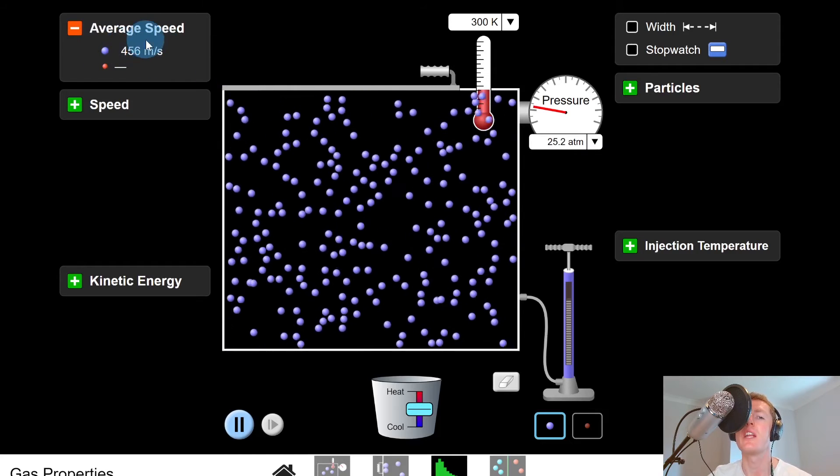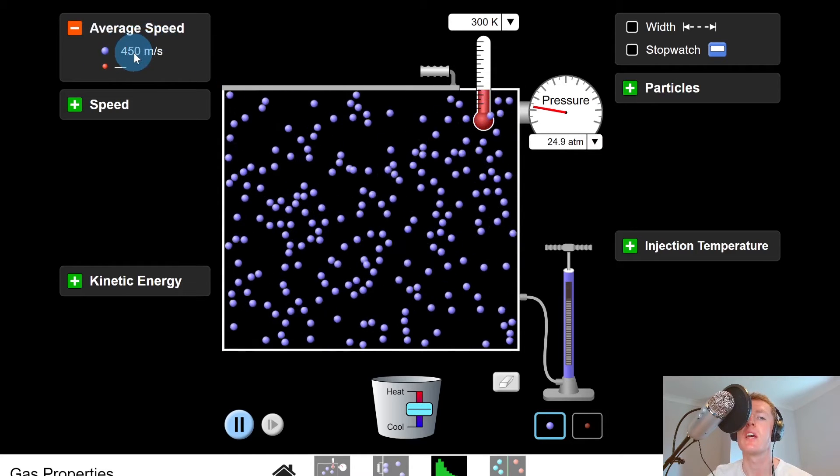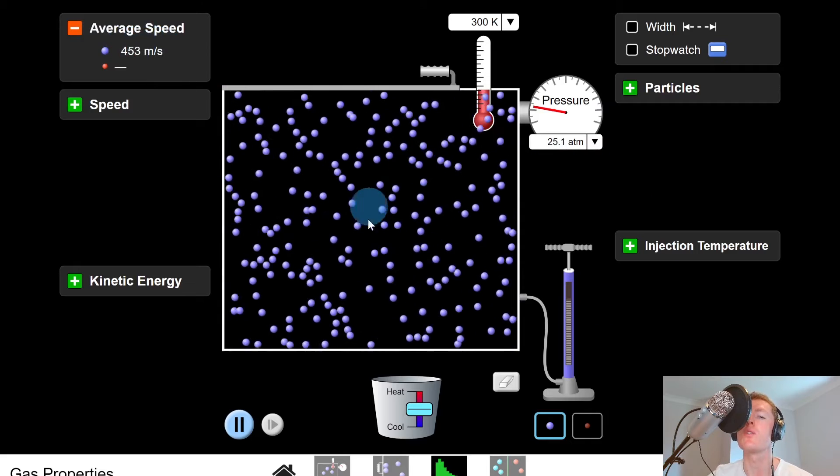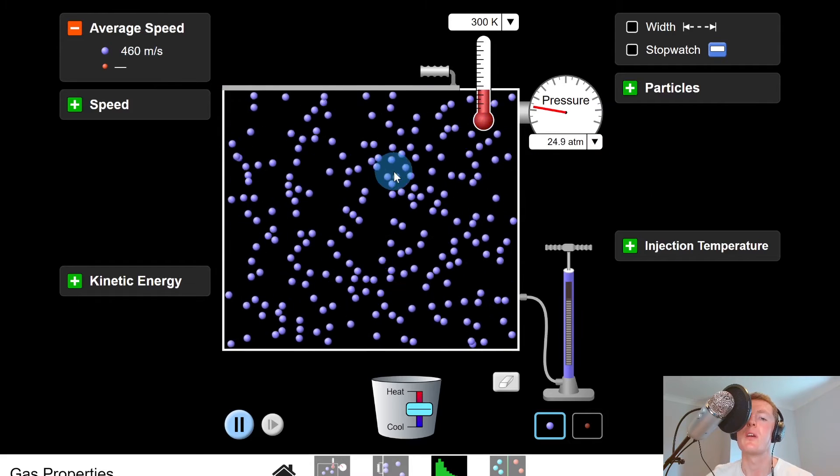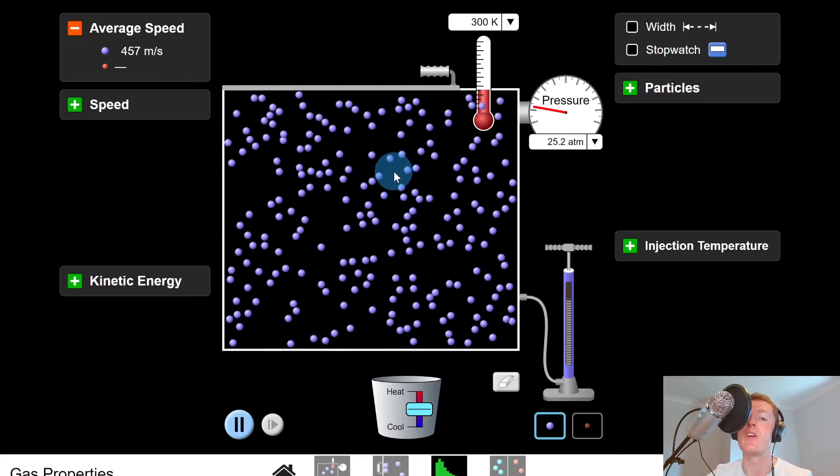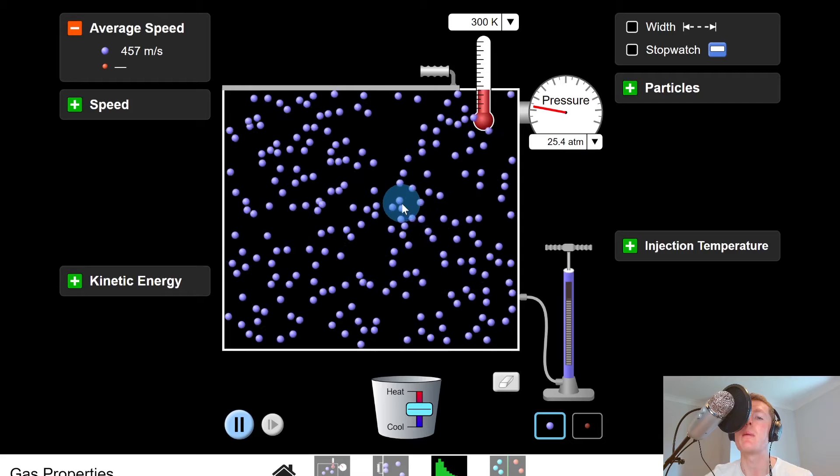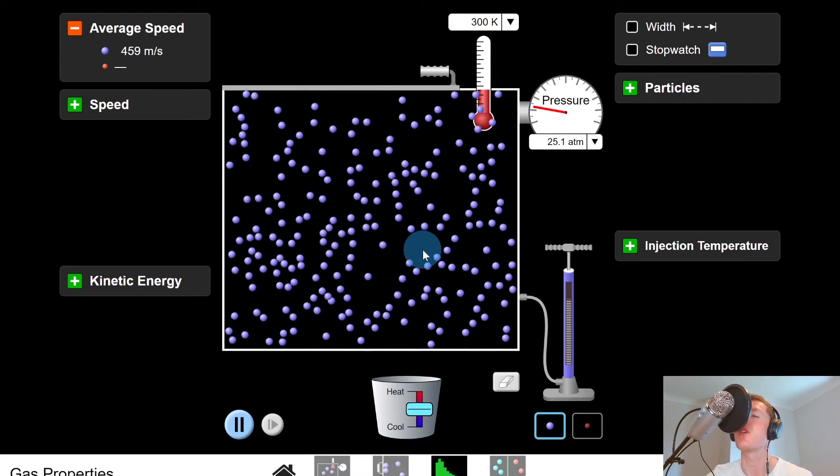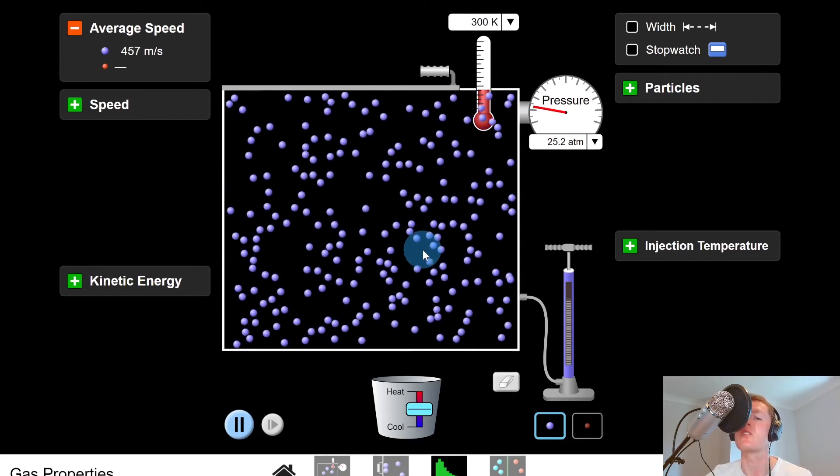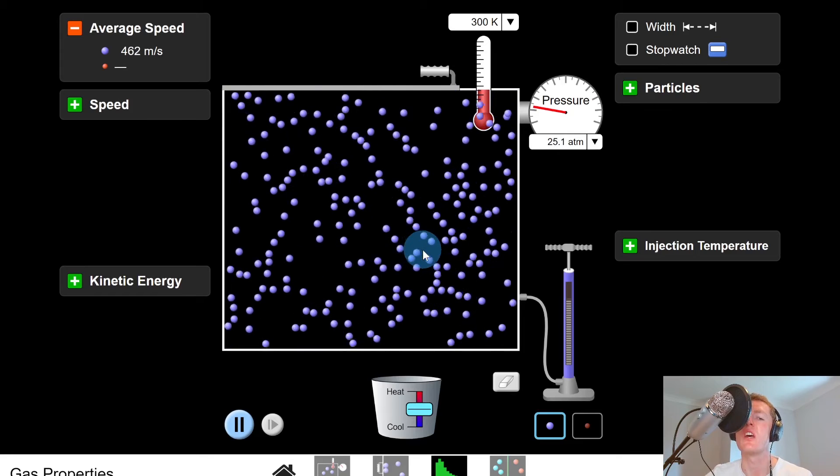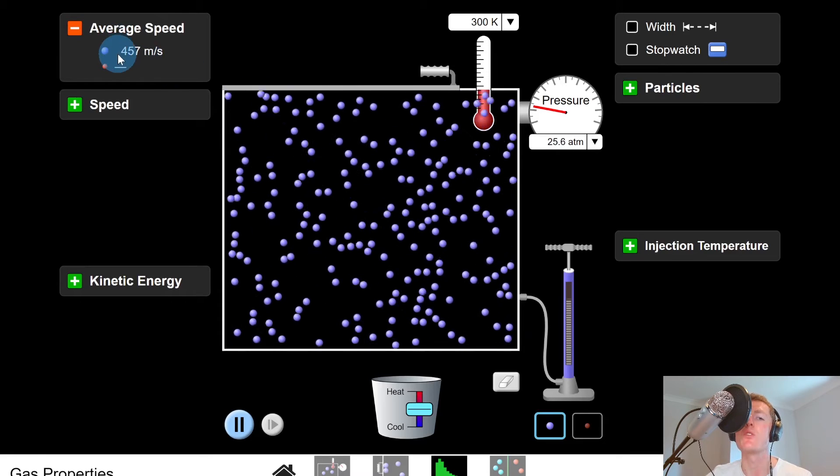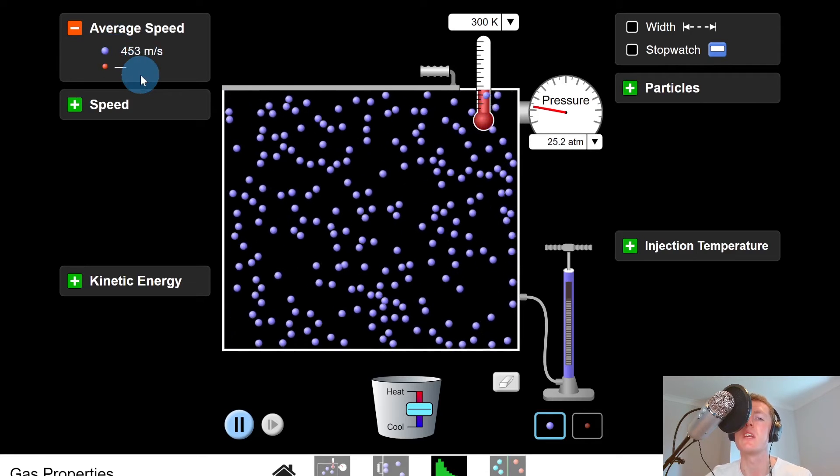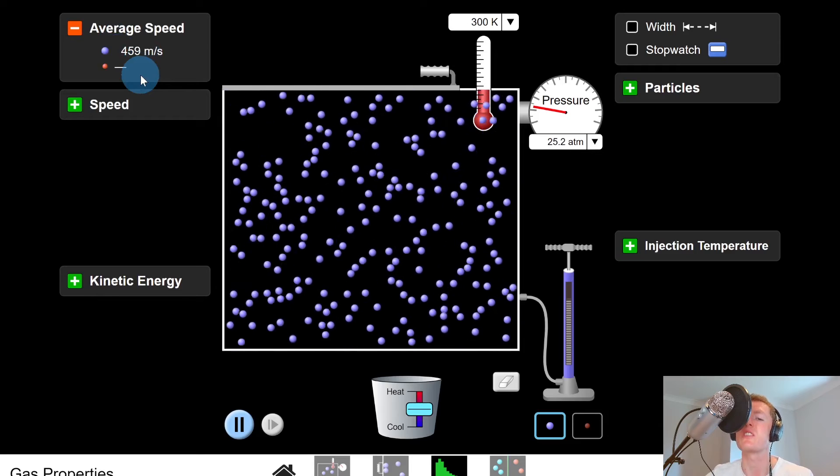So you'll see here that we've got an average speed labelled on the top left. And this is the average speed of all the particles moving in this container. And you'll see the average speed is quite random at points because remember the particles are moving about all randomly in different directions and hitting off each other and with the walls of the container. So this is causing their speeds to change. And the average speed here you'll notice is ranging from about 450 to just over 460 metres per second.